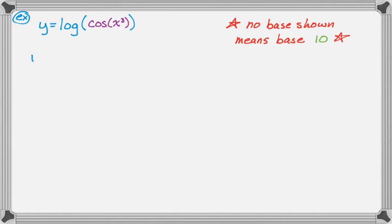So when we rewrite this, we're going to rewrite it as the natural log of cosine of x cubed over the natural log of 10. So if you don't remember that, you kind of won't have any idea what to do here. So we have this.